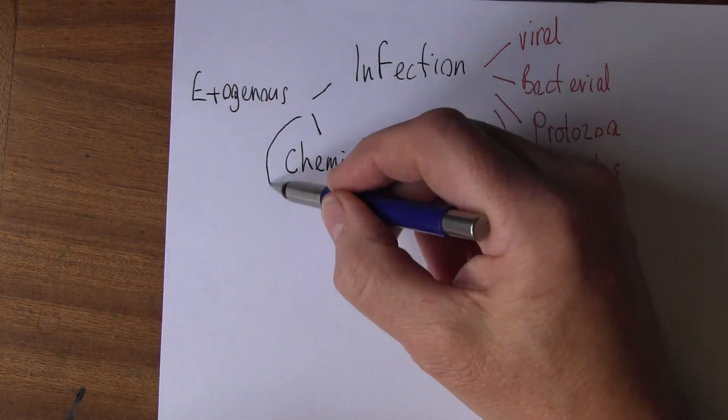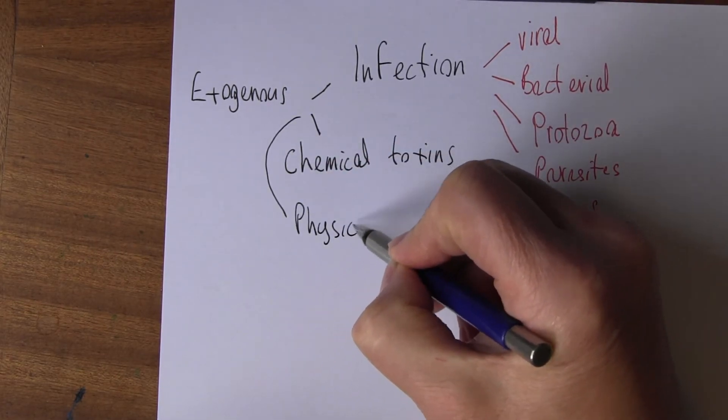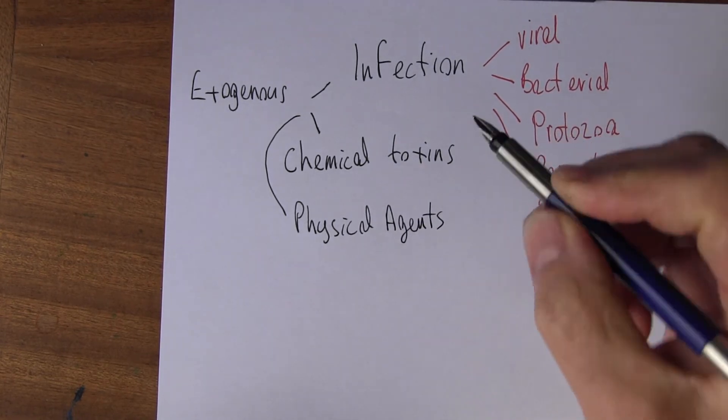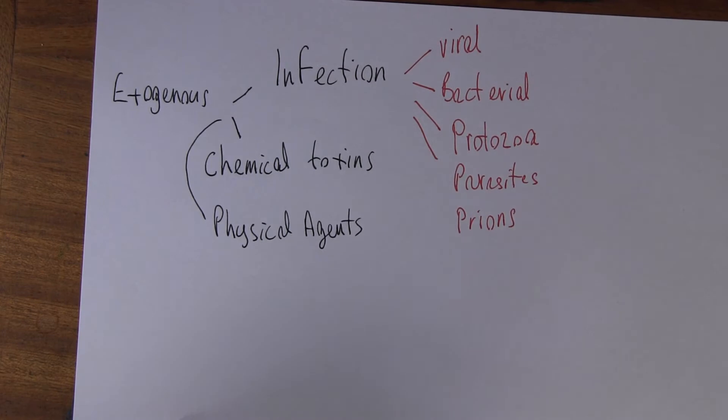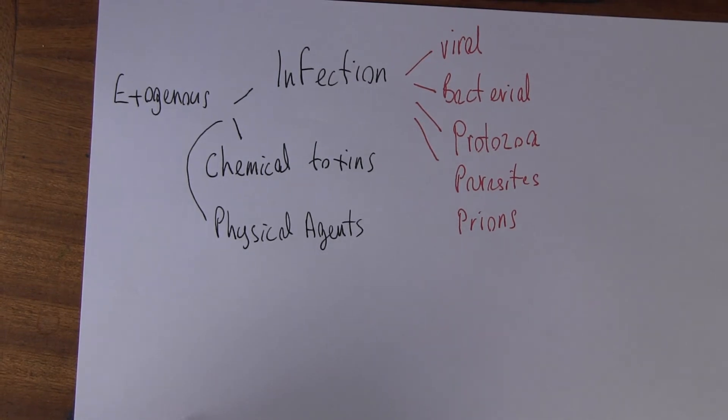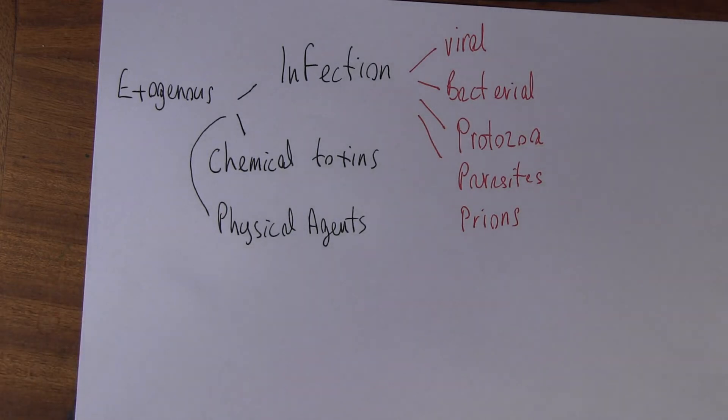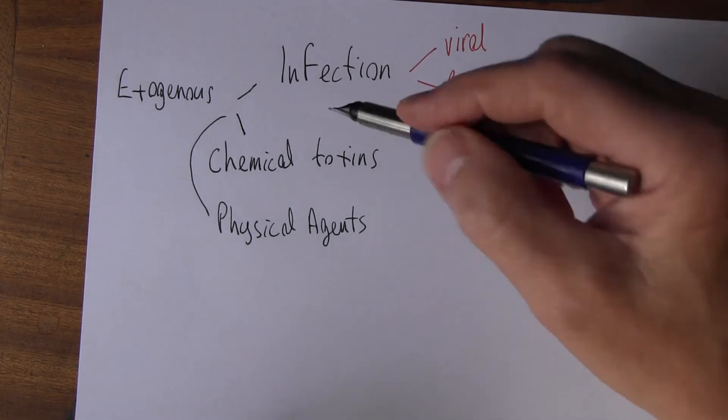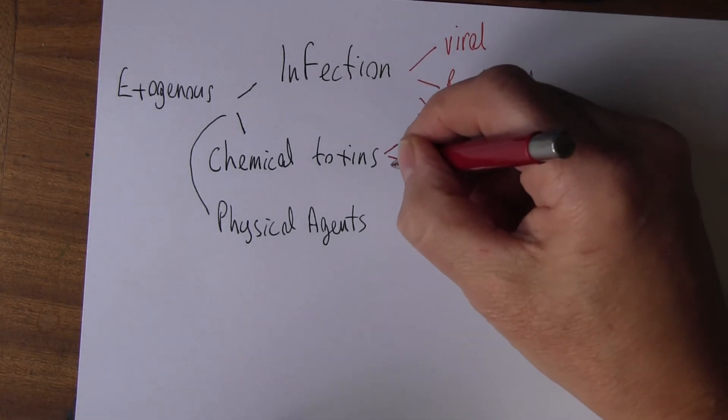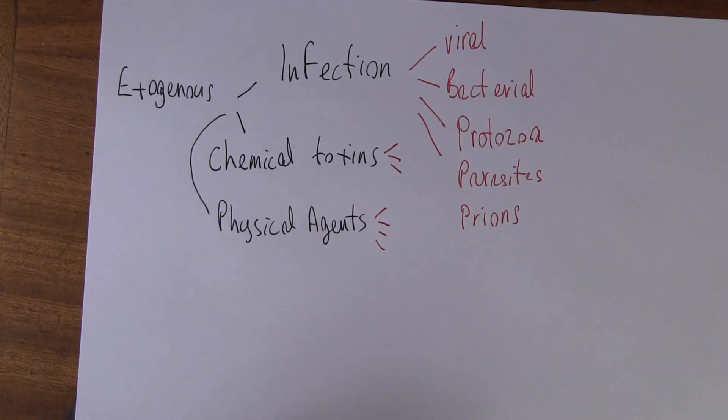And then we can think about physical agents. So physical agents - we can be thinking about trauma. Any form of energy that goes through the body that is in excess. Kinetic energy will cause trauma, disrupting the integrity of the tissues. Heat and cold we could include there. Electrical energy if we get electrocuted. We could include radiation there as well actually, because radiation can lead to the mutations which can lead to cancers. So you can see we've got all these subdivisions here if you want to make up a nice big mind map. We could add those to physical agents.